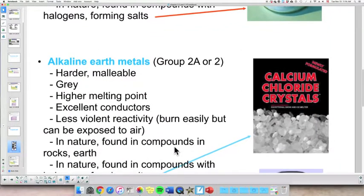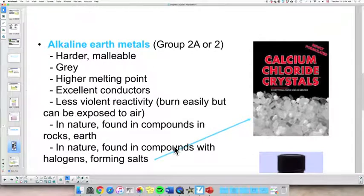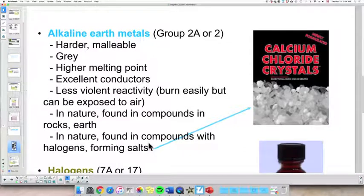In nature, we often find them as compounds in the form of rocks. And they also form compounds with group 7 called halogens, and they form different types of salts.